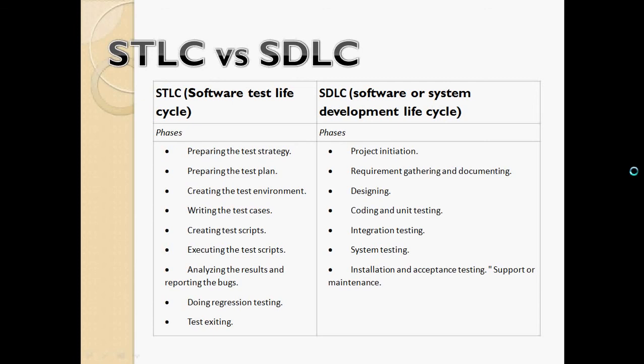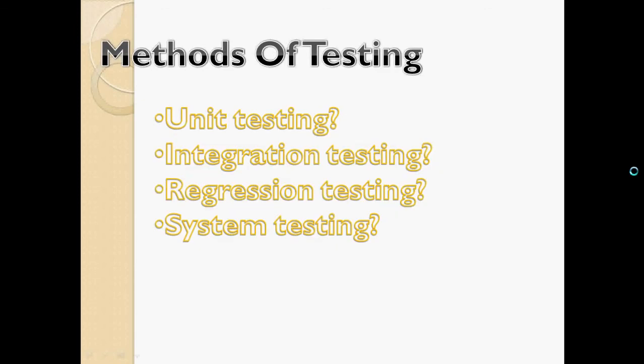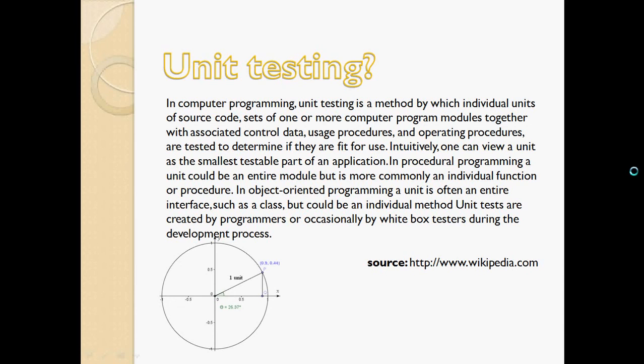Once you start testing, you're going to realize there are different methods to testing. You can do unit testing, integration testing, regression testing, and system testing. Unit testing is basically testing the smallest component in a software system. For example, if you have a class and you test that in Java, that would be unit testing. In databases, it would be testing a table, a particular ETL process, or a stored procedure — basically testing a unit that works alone.